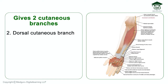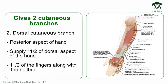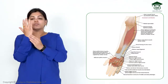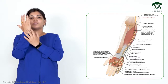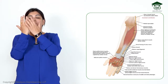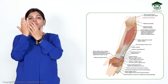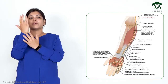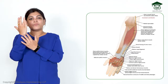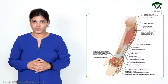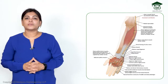The ulnar nerve also gives a dorsal cutaneous branch. So there are two cutaneous branches: the palmar cutaneous branch and the dorsal cutaneous branch. The dorsal cutaneous branch goes to the posterior aspect of the hand and supplies one and a half fingers and one and a half of the dorsal aspect of the hand, including the nail beds.